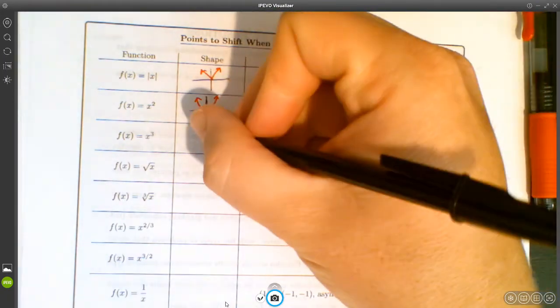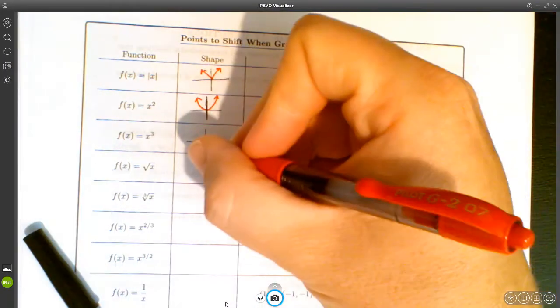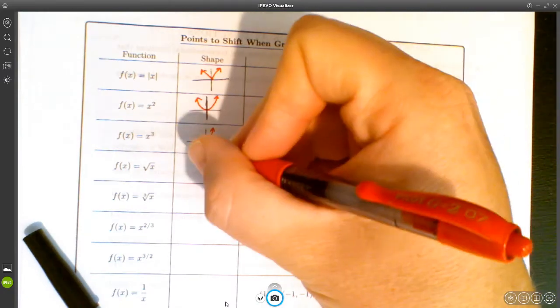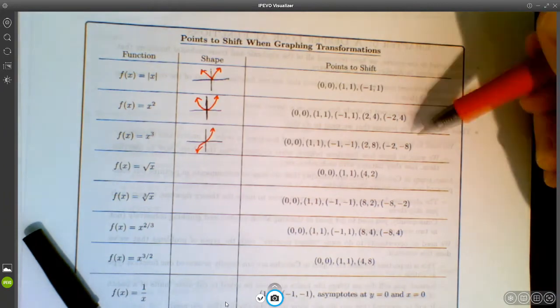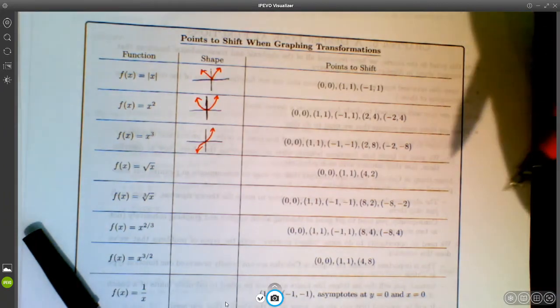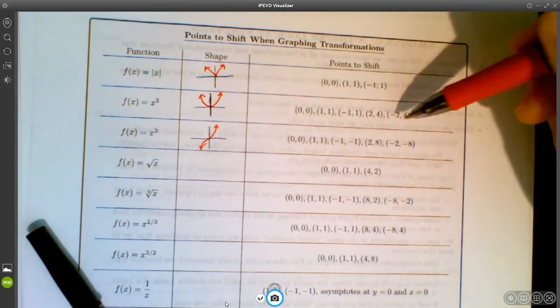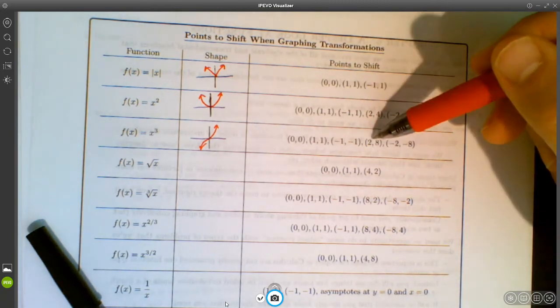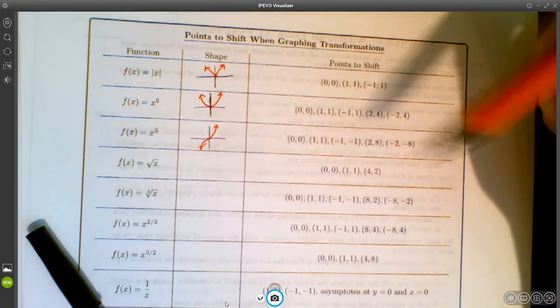So, the shape of a cubic function is something like this. And these are the points that I expect you to plot for each of these types of functions. Again, you don't have to memorize these if you understand where they're coming from. Like the point (2,8), you don't have to memorize that. You just know that when you plug in 2 for x, you get 8 as your output.